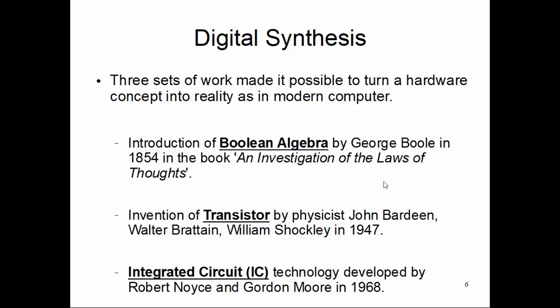Half a billion transistors on a fingernail-sized device — maybe something like one millimeter by one millimeter square area. It is a very small space, and within that small space there are half a billion transistors combined together to make a processor. How is that possible?